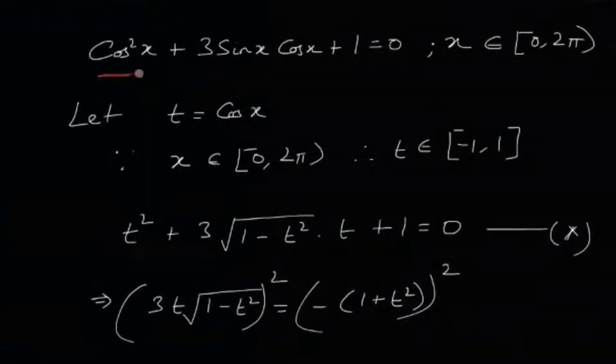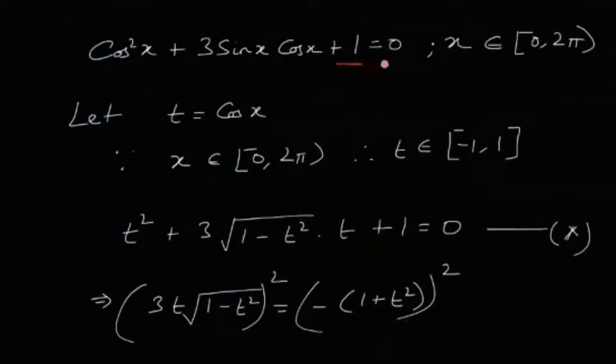Welcome to Chinta Statistics and Data Science. Today we're going to solve problem number 15 from the PSA section of ISA MSTAT 2019. The problem says: how many solutions does the equation cos²x + 3·sin(x)·cos(x) + 1 = 0 have for x belonging to this semi-open interval? There are four options: 1, 2, 3, and 4.